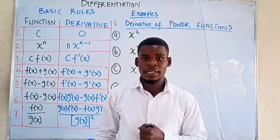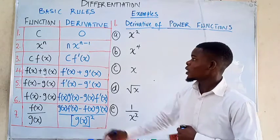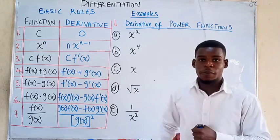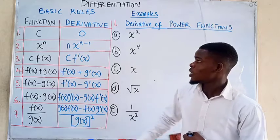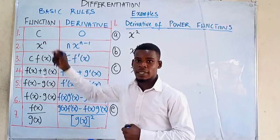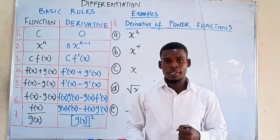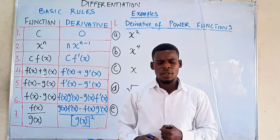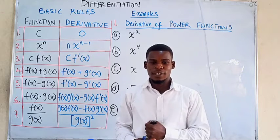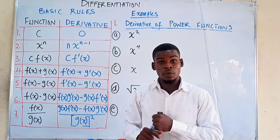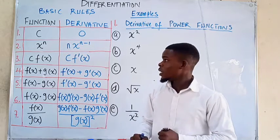In this video we want to learn some basic differentiation rules. We have the functions and their respective derivatives. In a previous video we talked about the derivative of a constant — for any constant, the derivative is just zero. So when the function is just a number like 5 or 10, without x, the derivative is zero.